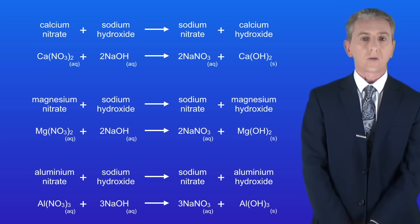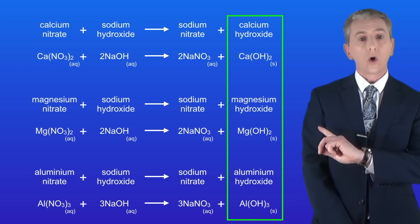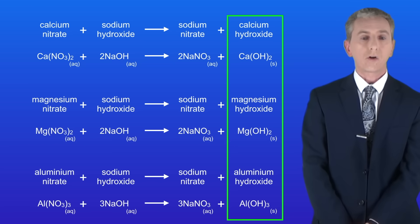I'm showing you the other equations here and this shows all three of the insoluble metal hydroxides that form the precipitates. Okay, now we can use sodium hydroxide solution to test for three other metal ions. And we're going to look at those now.